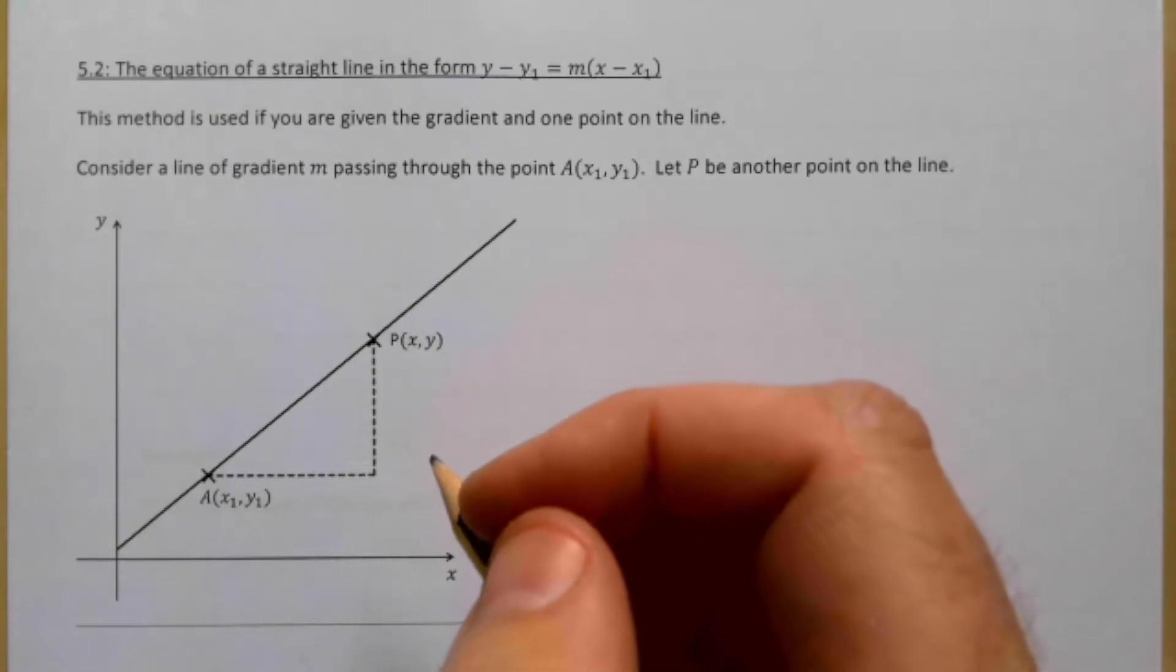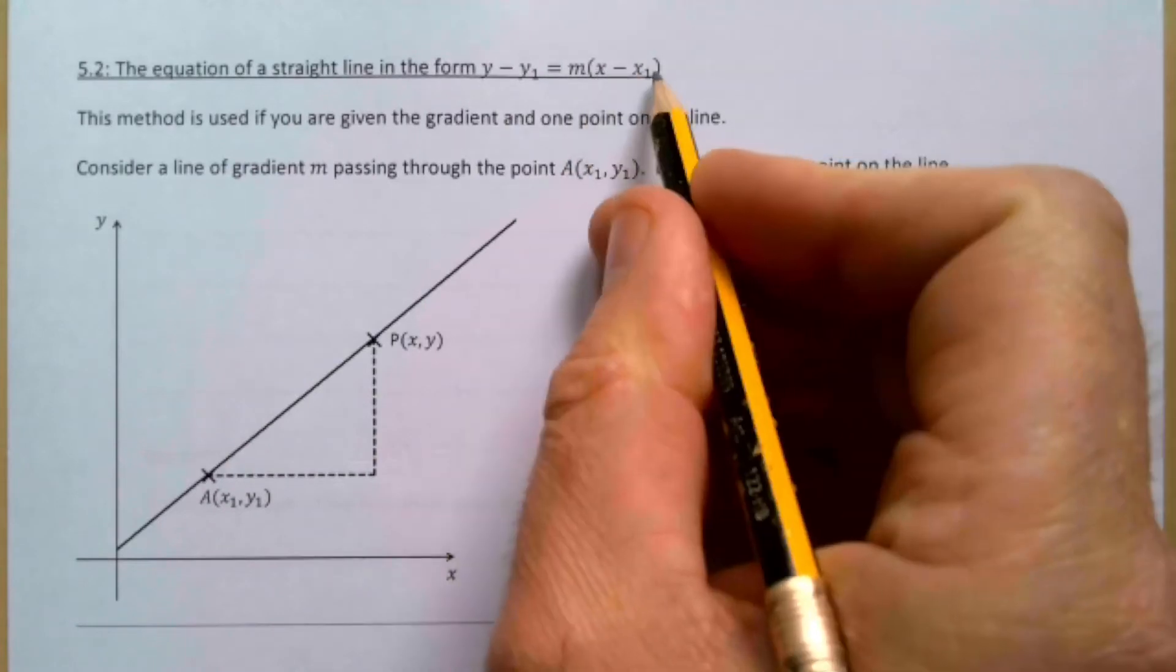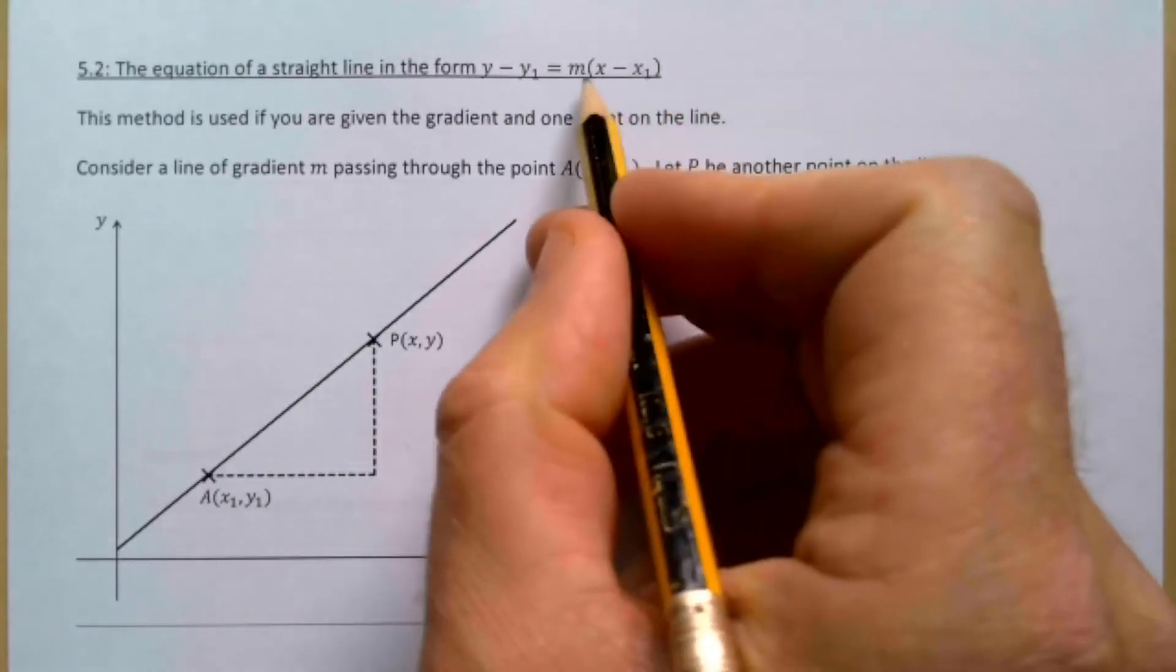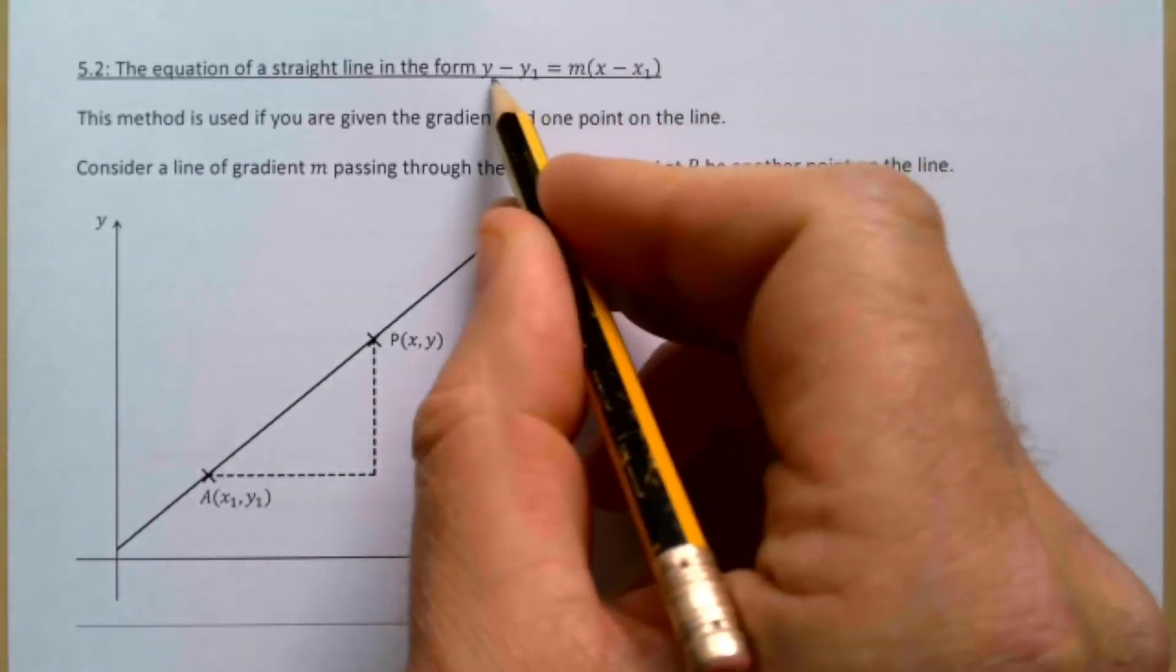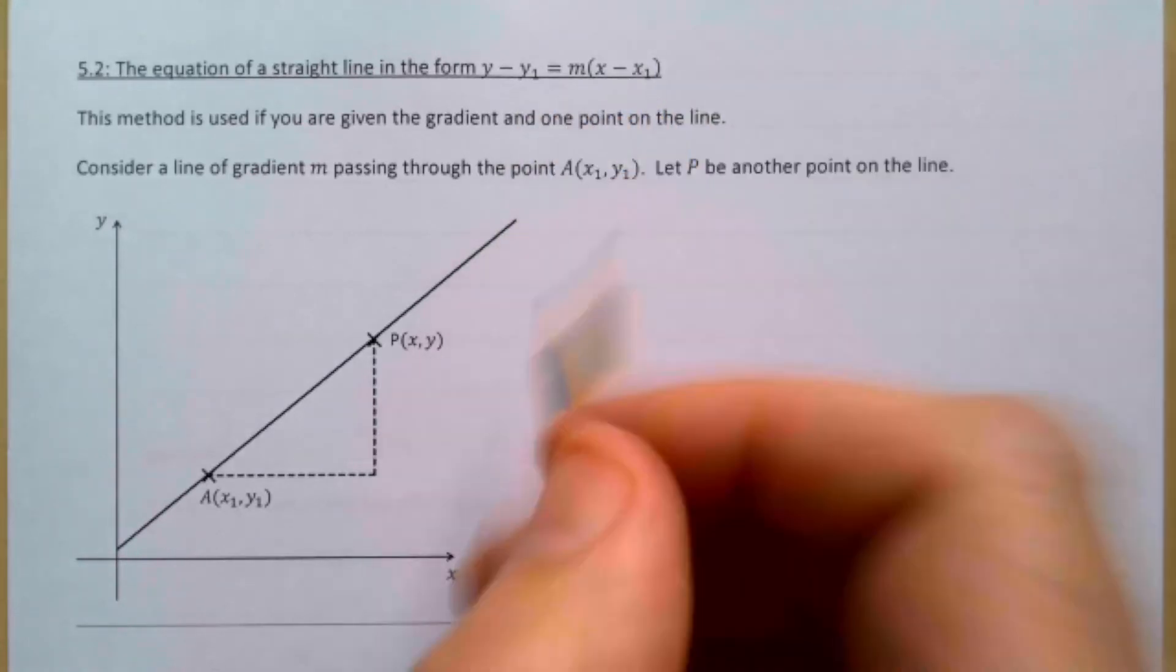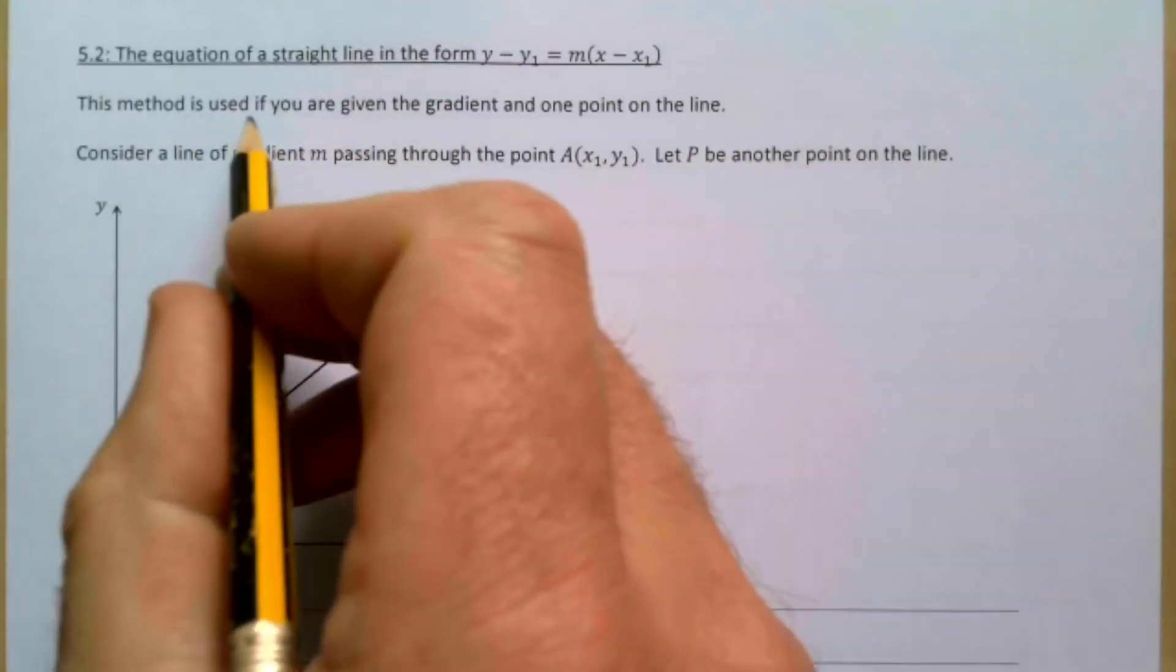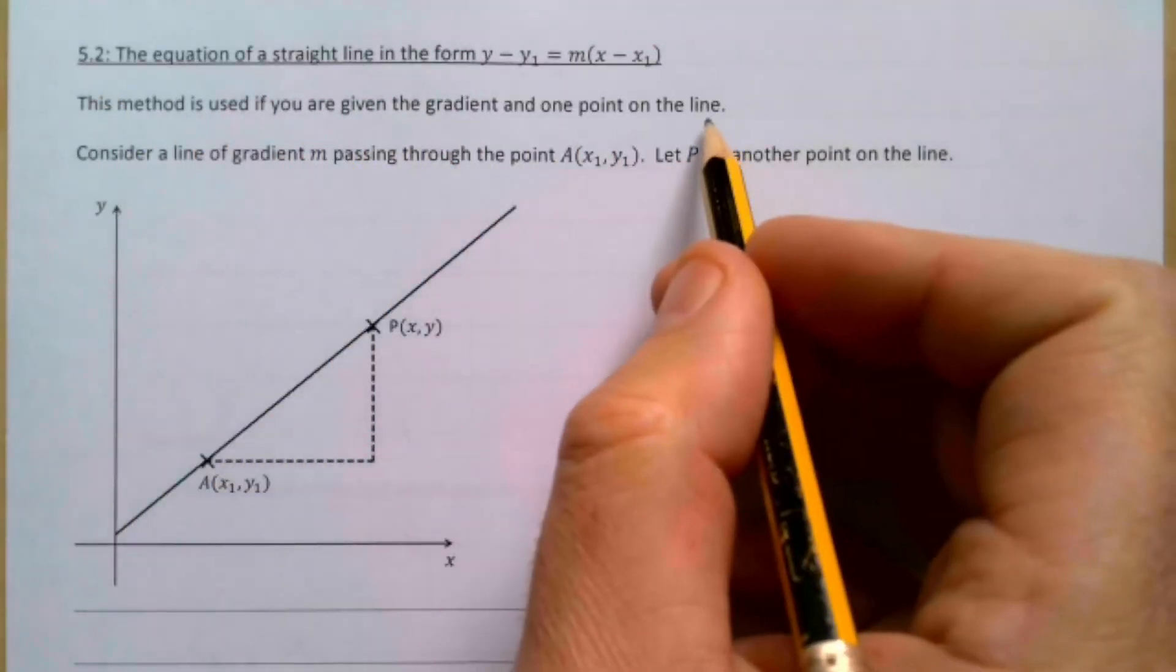On the next page then, the equation of a line in the form y - y1 = m(x - x1). I guess this is a different form of y = mx + c, and sometimes it's actually more convenient to use this one. It just makes life a bit easier. But you can use either if you're trying to find the equation of a straight line. This method is used if you're given the gradient and one point on the line.